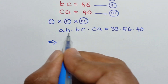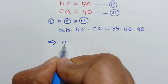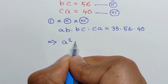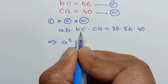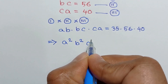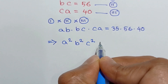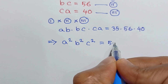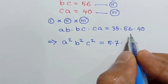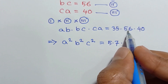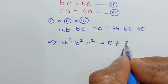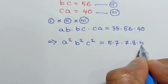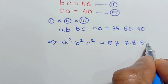On the left side, a times a is equal to a squared, b times b is equal to b squared, and c times c is equal to c squared. On the right side, 35 can be written as 5 times 7, 56 can be written as 7 times 8, and 40 can be written as 5 times 8.